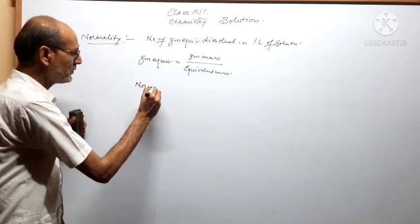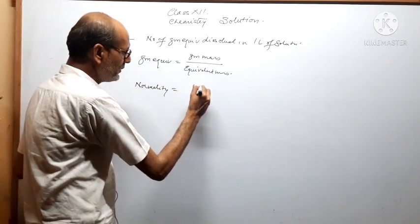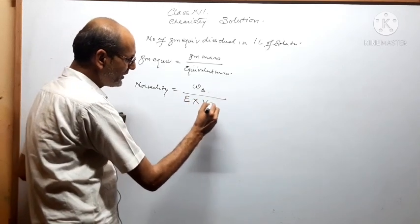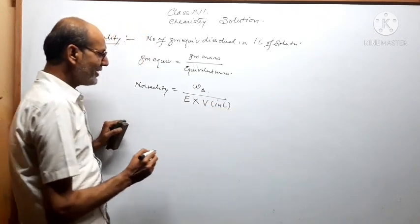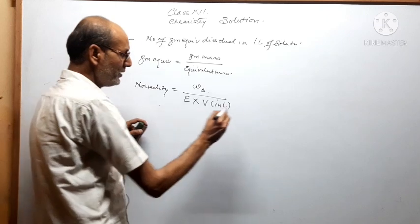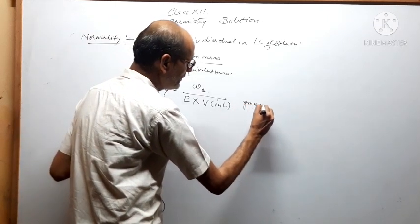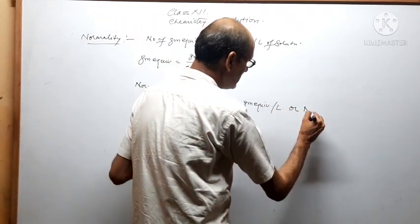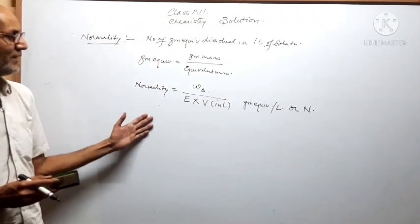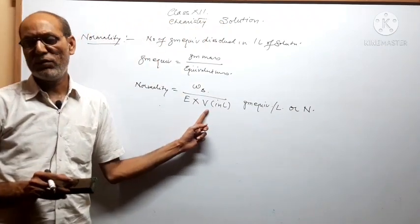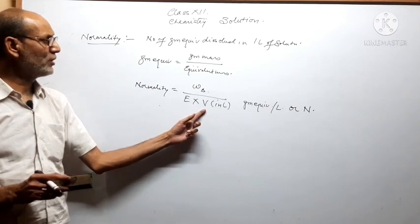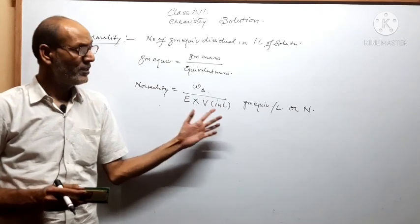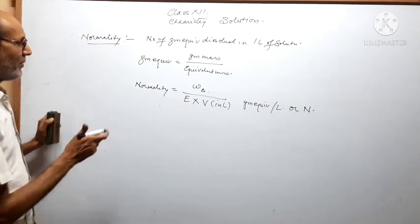Like molarity, normality also depends on temperature because volume is in the denominator, and volume changes with temperature according to Charles's law. Now solving a numerical: calculate the normality of H₂SO₄ solution when 19.6 gram H₂SO₄ is dissolved in 800 ml of solution.